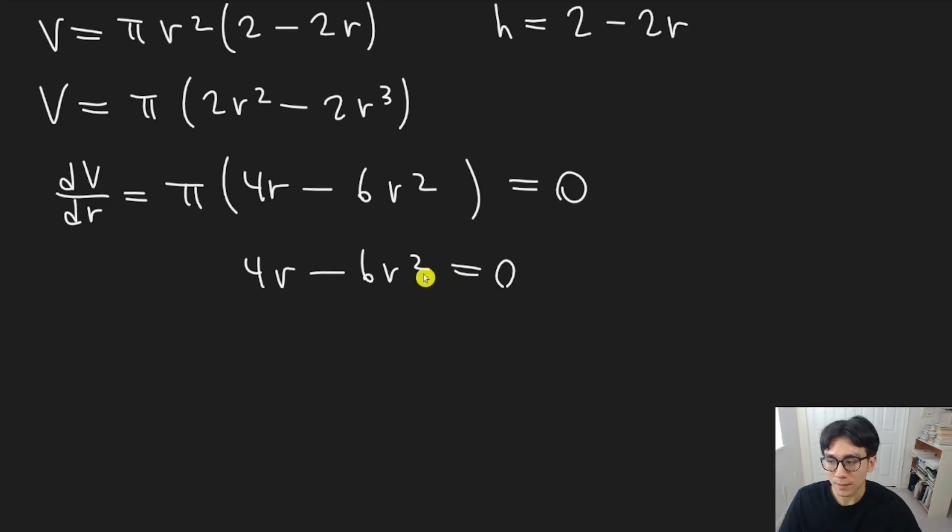So because there's no constant, there's an r in both terms. So we can actually factor that out as a common factor. There's also a two in both terms. So just to make things a bit simpler, we can actually factor out two r. You don't have to factor out the two, but it just makes things a bit simpler. What we're going to have left is two minus three r.